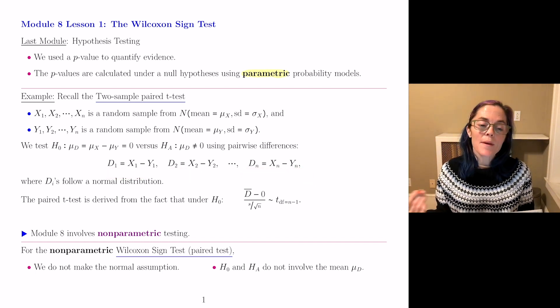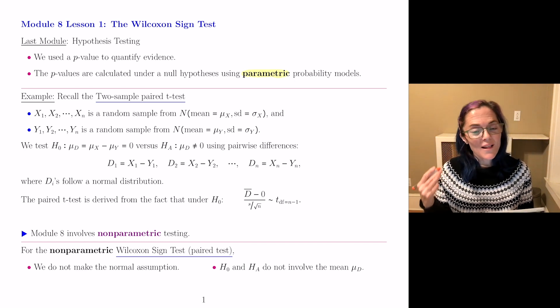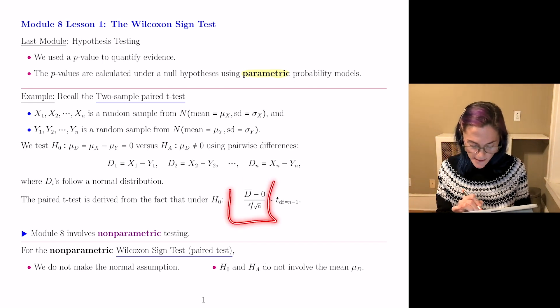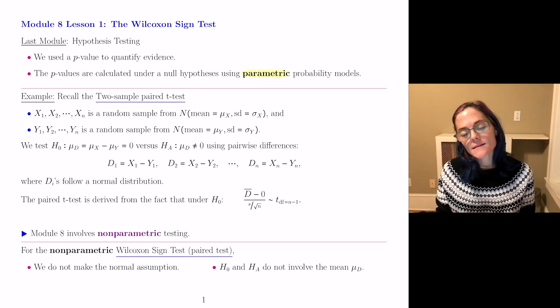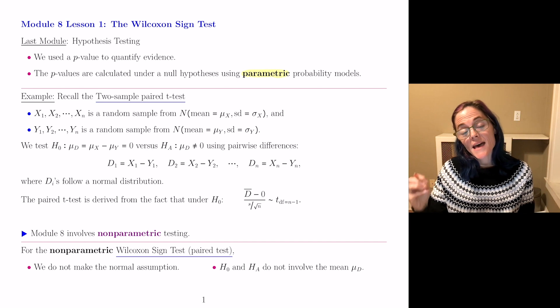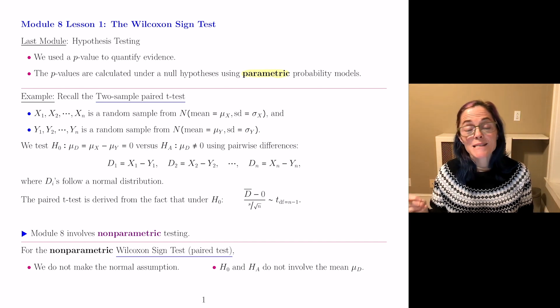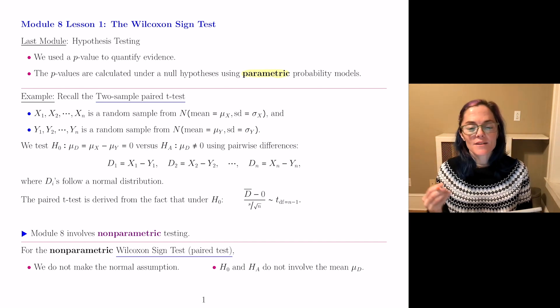And then the paired t-test came from the fact that under the null hypothesis, this is the sample average of the D's minus zero divided by s over the square root of n, s being the sample standard deviation,